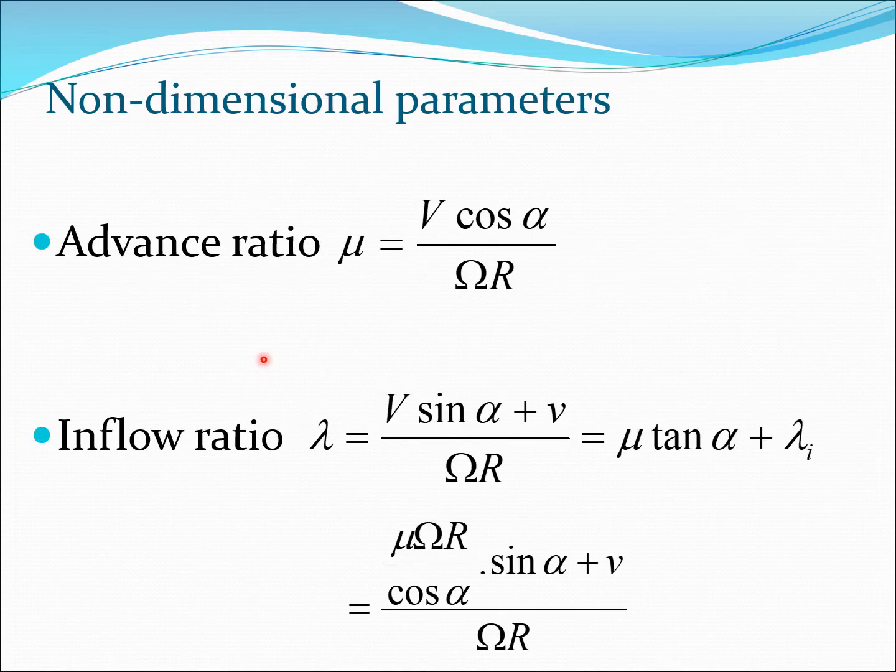We define some very important non-dimensional parameters which are ubiquitous in helicopter literature. The first is the advance ratio mu. This advance ratio is essentially a non-dimensional measure of the forward speed. We have taken the tangential component of the forward speed, tangential to the rotor disc plane, and divided it by rotation speed times blade radius. The net result is that this is a non-dimensional quantity because both numerator and denominator have velocity. This is very important and you must put this in your memory banks.